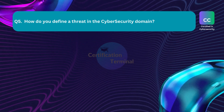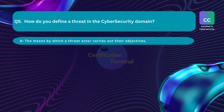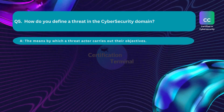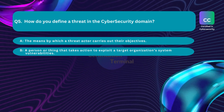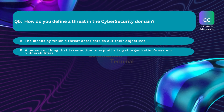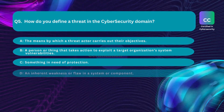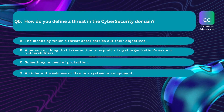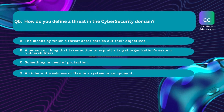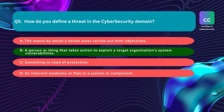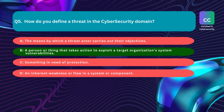Question number five: How do you define a threat in the cybersecurity domain? Option A: the means by which a threat actor carries out their objectives. Option B: a person or thing that takes action to exploit a target organization's system vulnerabilities. Option C: something in need of protection. Option D: an inherent weakness or flaw in a system or component. The correct answer is Option B.